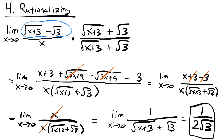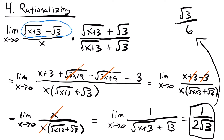If you prefer a rationalized answer, you can rewrite 1 over 2 square root of 3 as square root of 3 over 6, by multiplying top and bottom by square root of 3. Both forms are correct and have the same value. That was our rationalizing method for evaluating a limit we couldn't initially plug into.